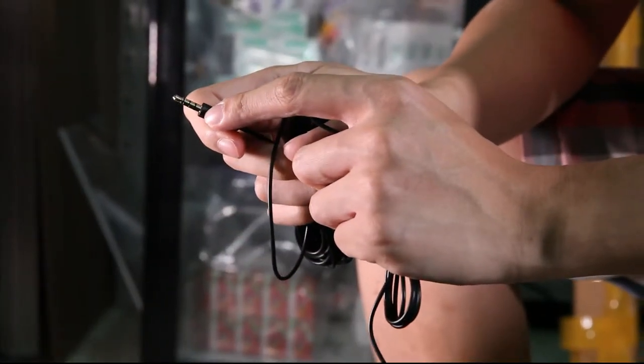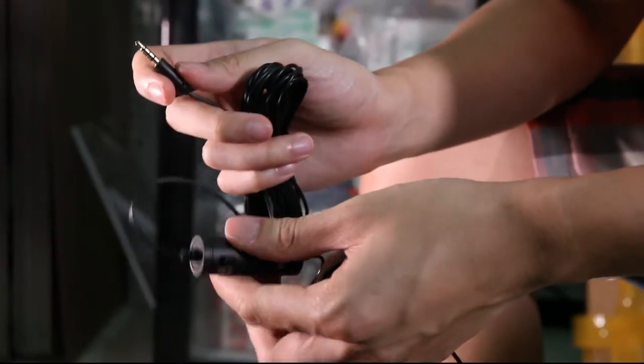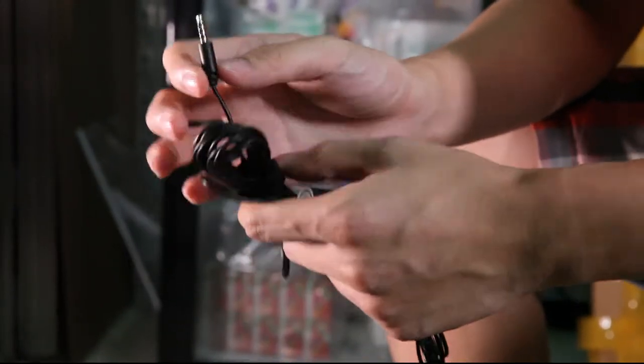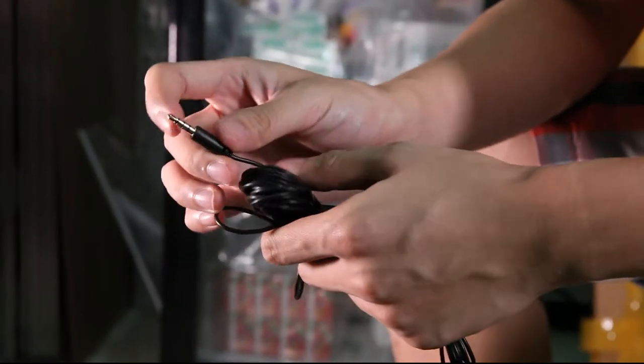This cable is called a TRRS cable. It has three bands here, which means it's very special. Usually it's used on phones, and some laptops also use this kind of band.